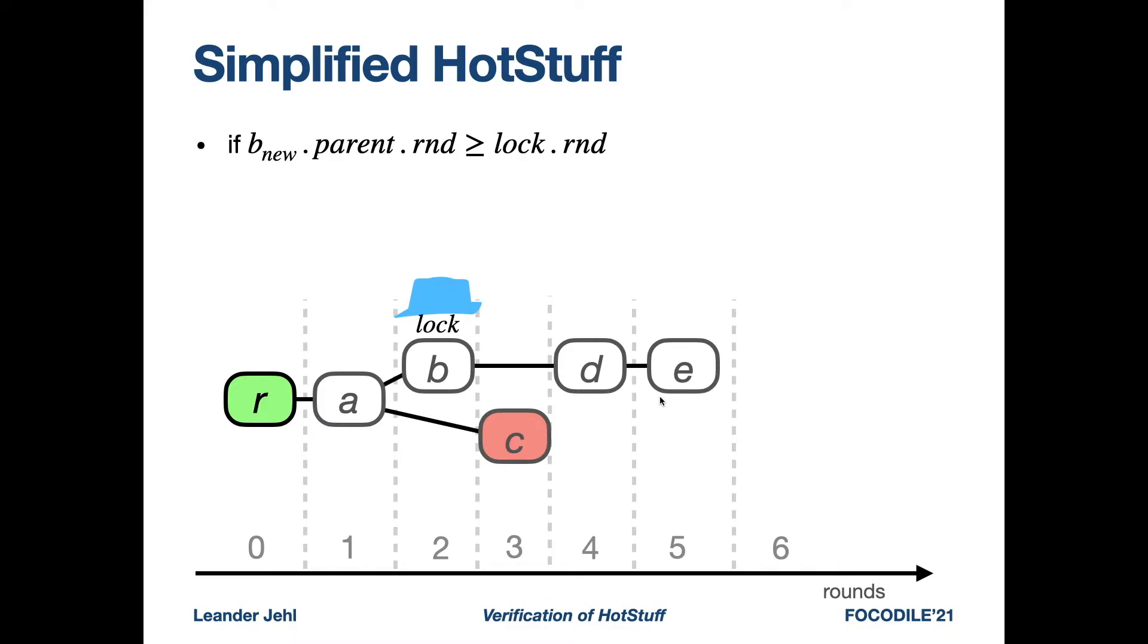Let's look at that rule in more detail. The figure here shows the tree at one process. This process has the lock at B, so the round of the lock is 2. Here we see that the rule allows our process to sign F1 and F2, but not F3. The parent of F1, block E, has round 5, which is larger than 2.